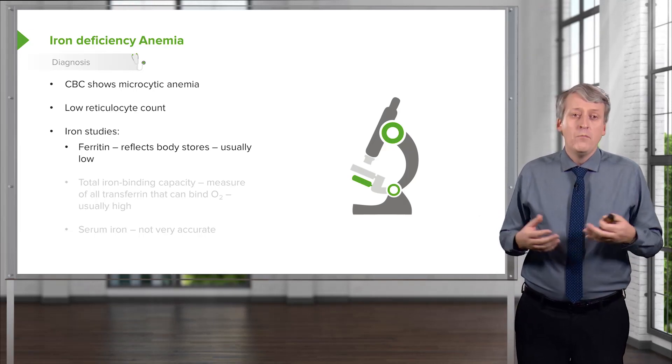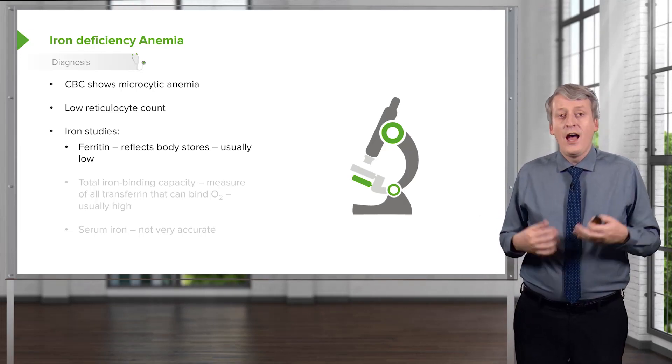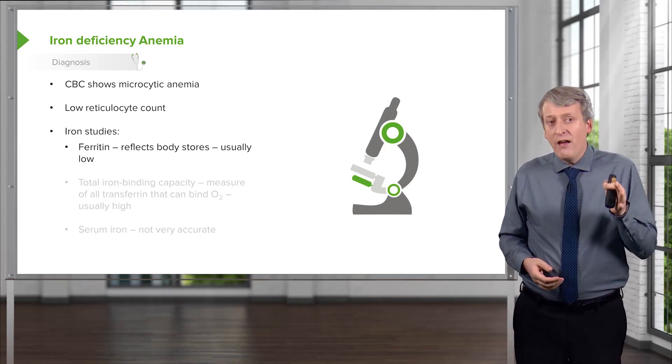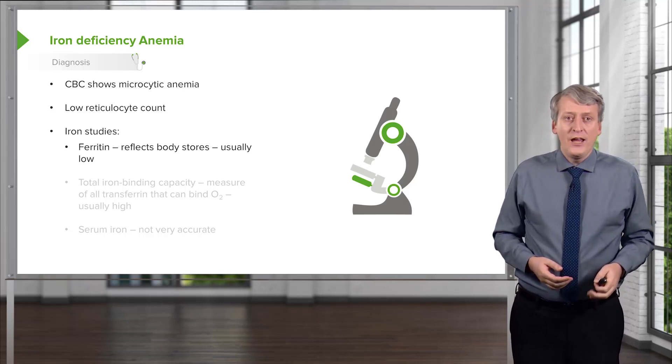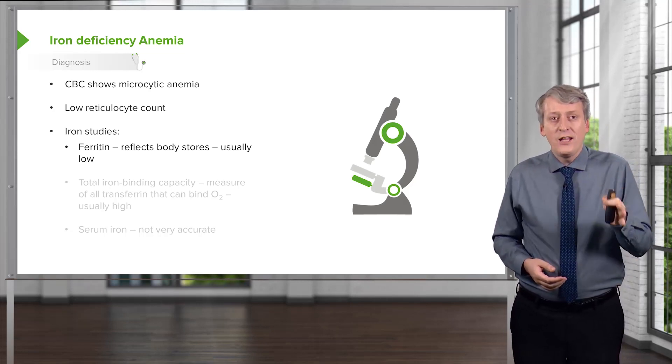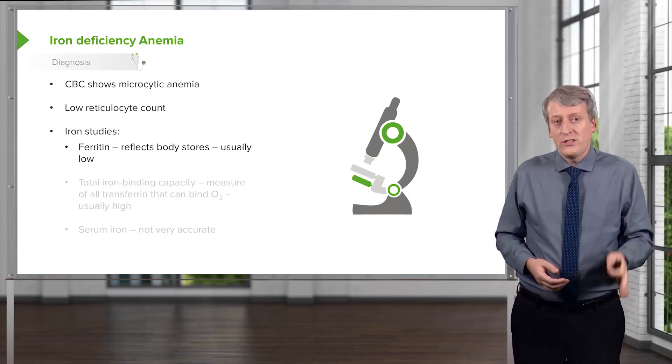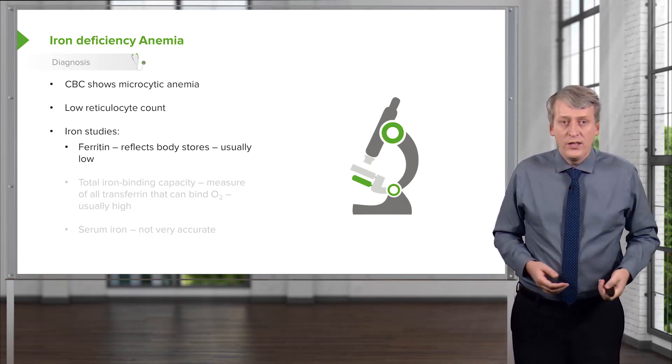The challenge with ferritin is that it's also an acute phase reactant. So if a patient has pneumonia, they may have iron deficiency but still have a falsely high ferritin, and you could miss the diagnosis if ferritin is the only test you're ordering.